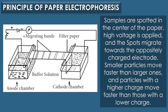Principle of paper electrophoresis: the technique involves the movement of charged particles under the influence of an electric field through the paper, which is usually soaked in a buffer solution. The apparatus consists of two compartments to accommodate a buffer through which an electric current is applied. A strip of filter paper is moistened with buffer and the ends of the strip are immersed into the buffer reservoir.